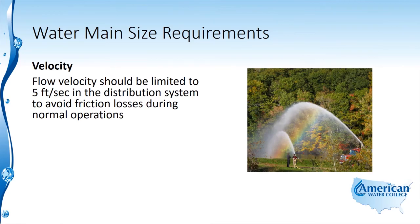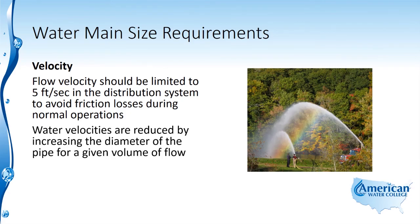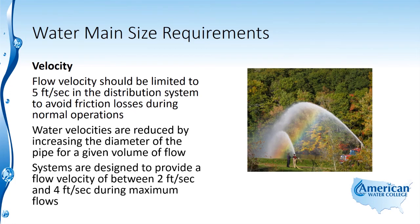Flow velocity should be limited to 5 feet per second in the distribution system to avoid friction losses during normal operations. Water velocities are reduced by increasing the diameter of the pipe for a given volume of flow. Systems are typically designed to provide a flow velocity of between 2 feet per second and 4 feet per second during maximum flows.